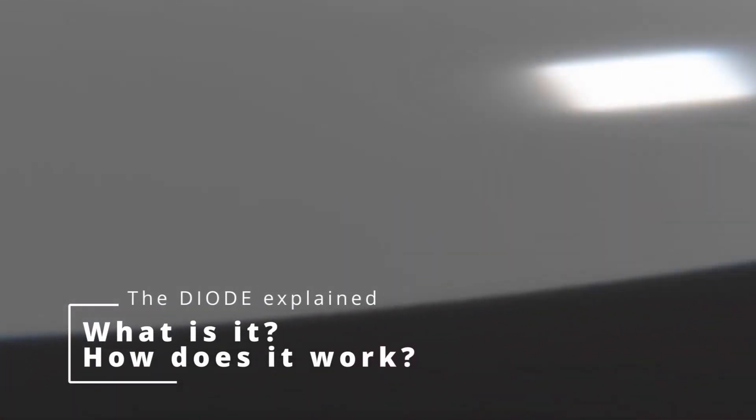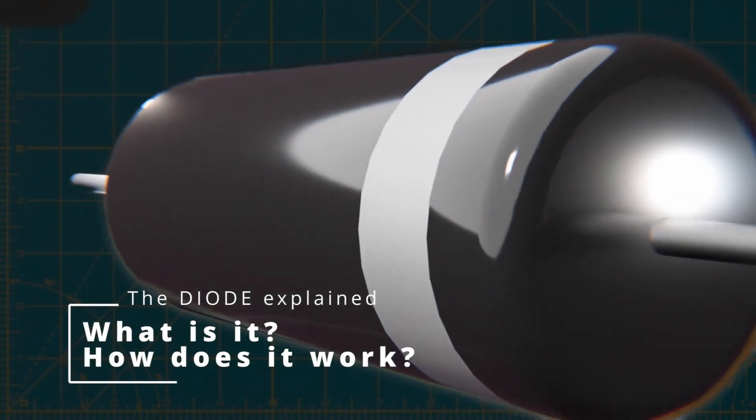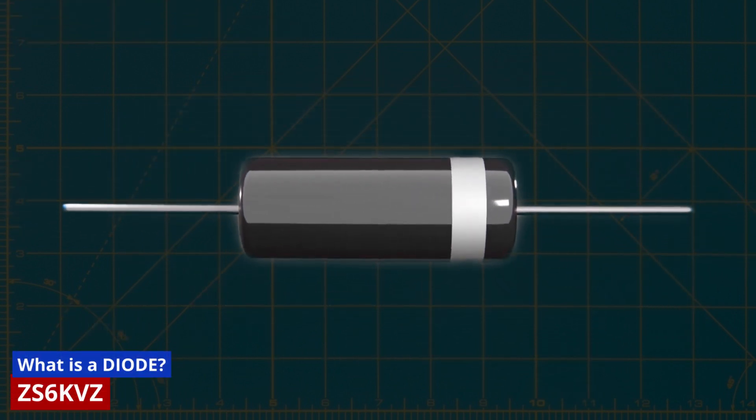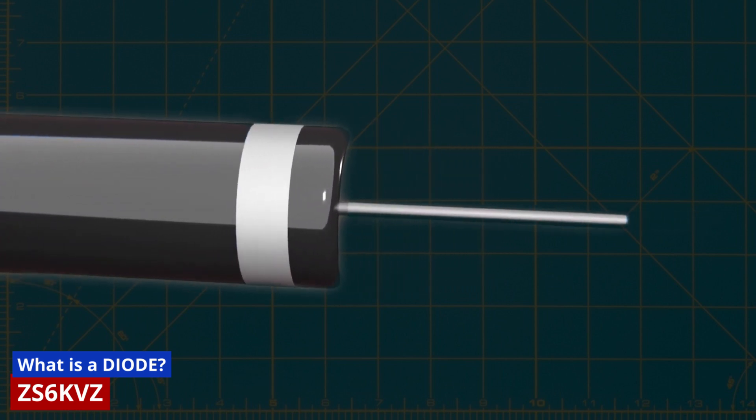What is a diode? A diode is a component that comes in various sizes and typically has a black cylindrical body with a stripe at one end, as well as leads for circuit connections.